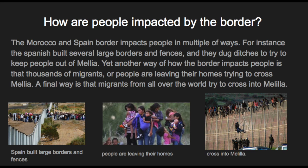The Morocco and Spain border impacts people in multiple ways. For instance, the Spanish built several large borders and fences, and they dug ditches to try to keep people out of Melilla. Yet another way the border impacts people is that thousands of migrants are leaving their homes trying to cross into Melilla. A final way is that migrants from all over the world try to cross into Melilla.